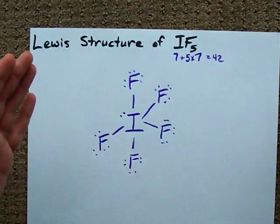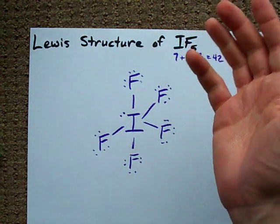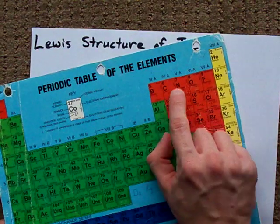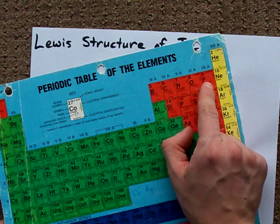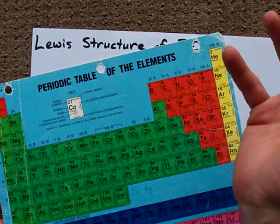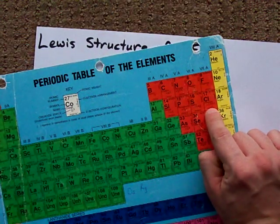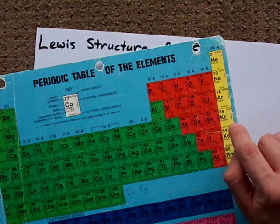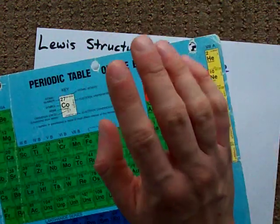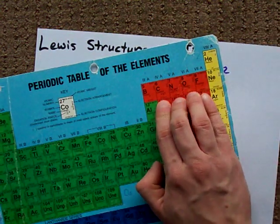This is where I'm going to tell you the secret no one actually tells you. The octet rule — where an atom is limited to 8 electrons — really only works for C, N, O, and F. Anything beyond that can technically have an expanded octet. Sulfur can have 12. I've seen chlorine with 10 or 12. Phosphorus with 10. Bromine can have 12. That rule that you can only put 8 in each atom really only works for these four.